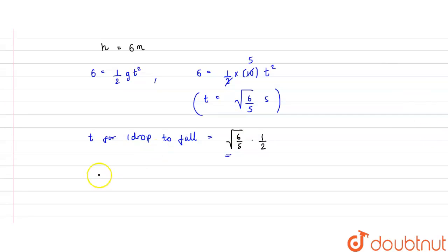So we can write that h of second is equal to half g t dash whole squared.